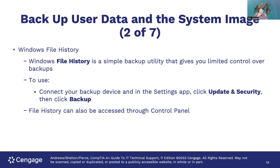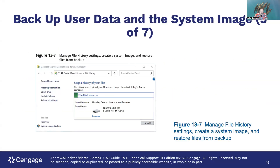Windows File History is a simple backup utility that gives limited control of your backups. To use it, connect a backup device, then in the Settings app go to Update and Security, click on Backup. You can also access File History through the Control Panel. The interface shows options to restore personal files, select the drive, exclude folders, and access advanced settings. You can select the destination file and turn File History on and off.